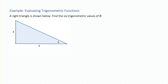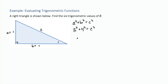Let's look at an example of actually evaluating these six functions. We have a right triangle with two side lengths, three and four, but we don't have the hypotenuse — the longest side, opposite the right angle. We can find it using the Pythagorean theorem: a squared plus b squared equals c squared. So three squared plus four squared equals c squared, that's 9 plus 16 equals 25, and taking the square root gives us c equals 5.